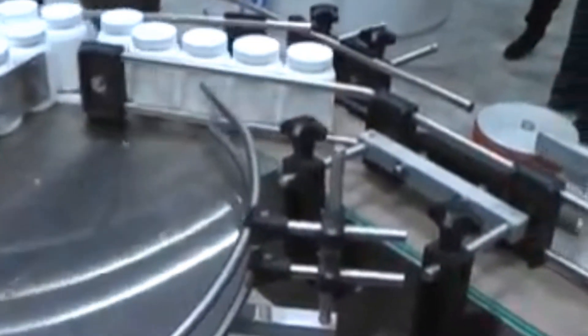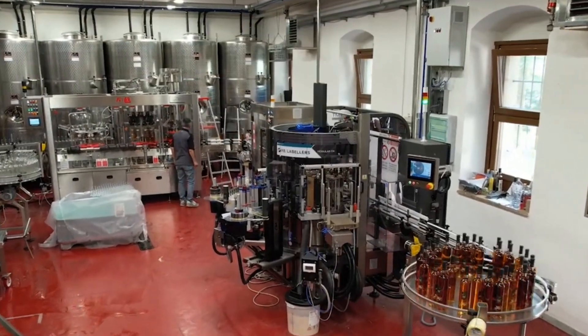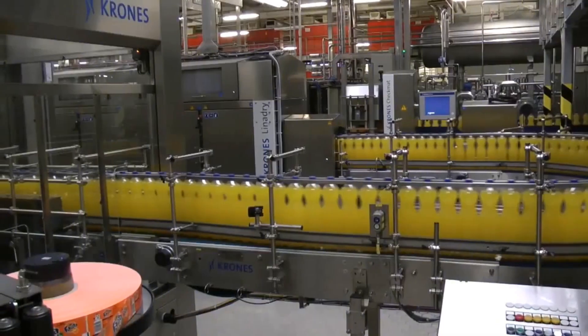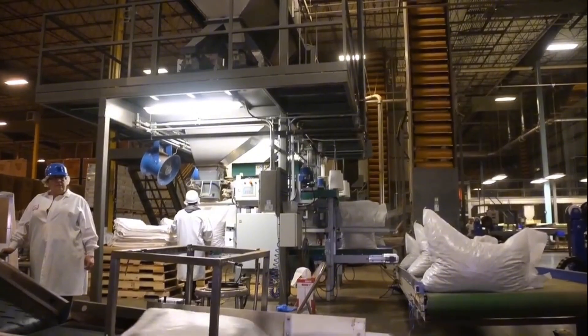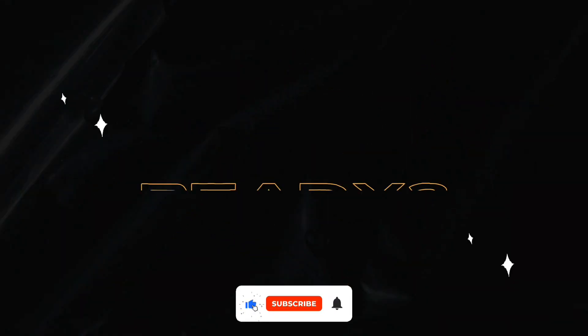Did you know labeling machines play a vital role in food making? They don't just put labels on products, but also make sure they're safe and follow the rules. Here at MechMinds Hub, where knowledge and mechanics combine. Let's get started.